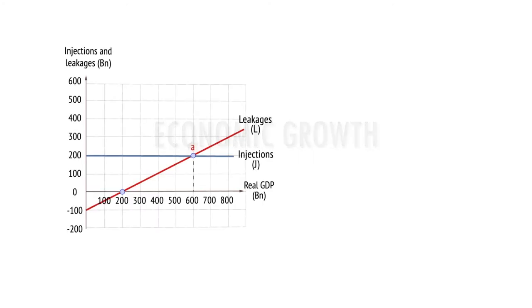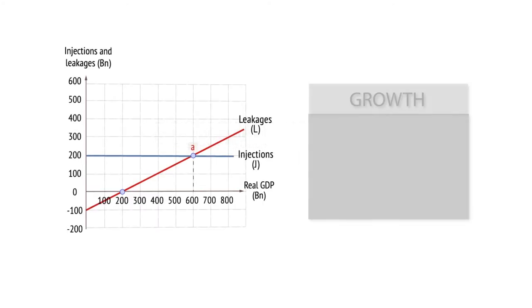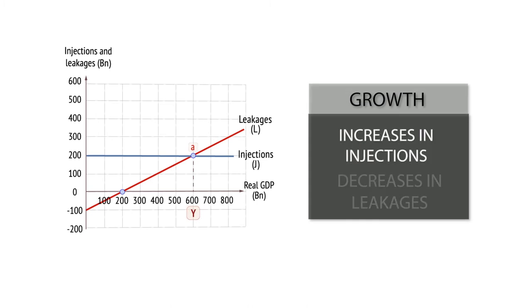Economic Growth. Growth occurs when either injections increase or leakages decrease. Economic growth occurs when there are sustained increases in real GDP. This usually means at least two consecutive increases in GDP growth.